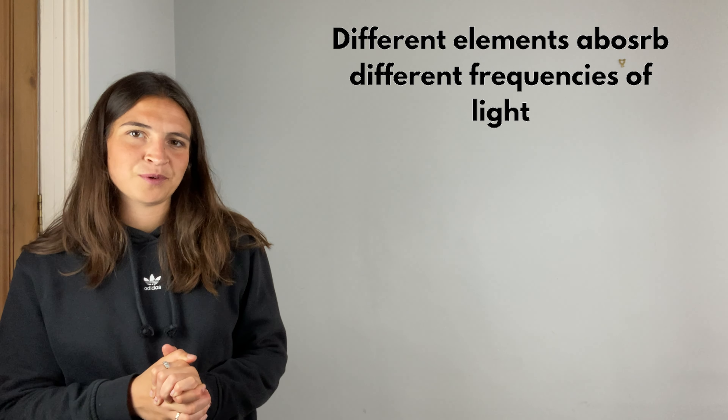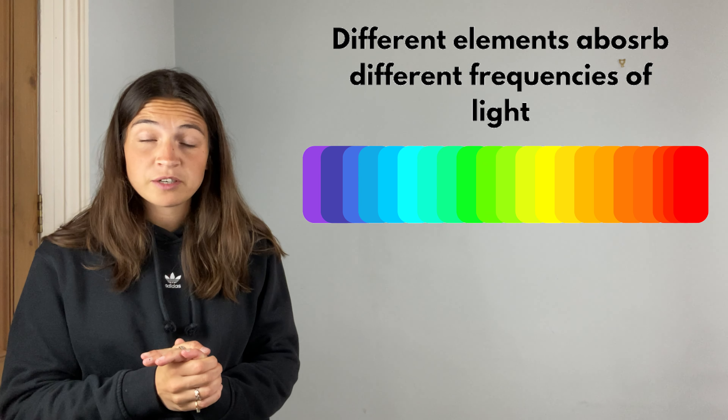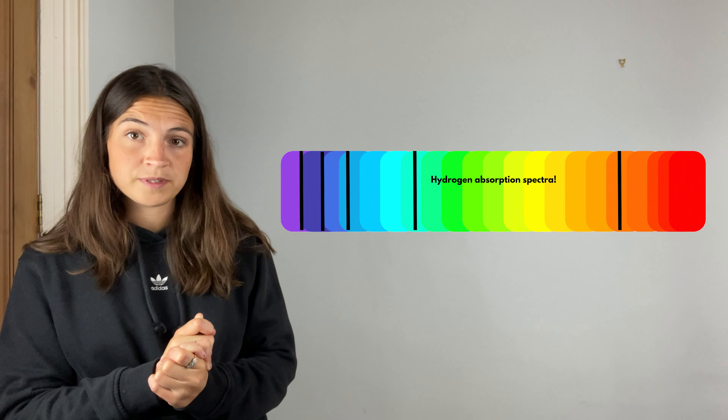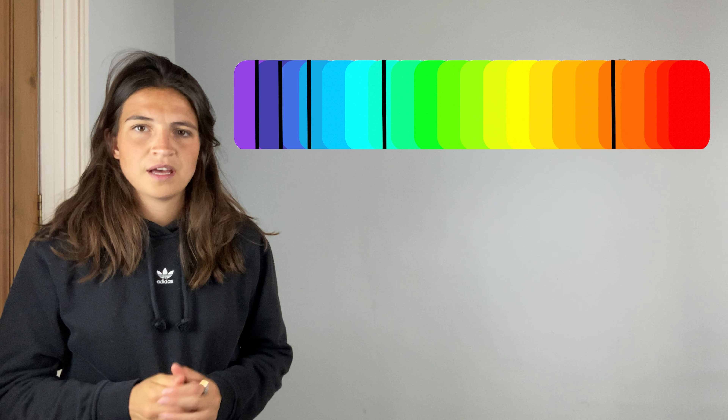Here is my visible light spectrum. Hydrogen absorbs certain frequencies of this visible light. You can see the frequencies that the hydrogen has absorbed are represented by these dark lines. These specific frequencies correspond to the electron moving between energy levels in my hydrogen atom. The point is, hydrogen gives me this very particular pattern.